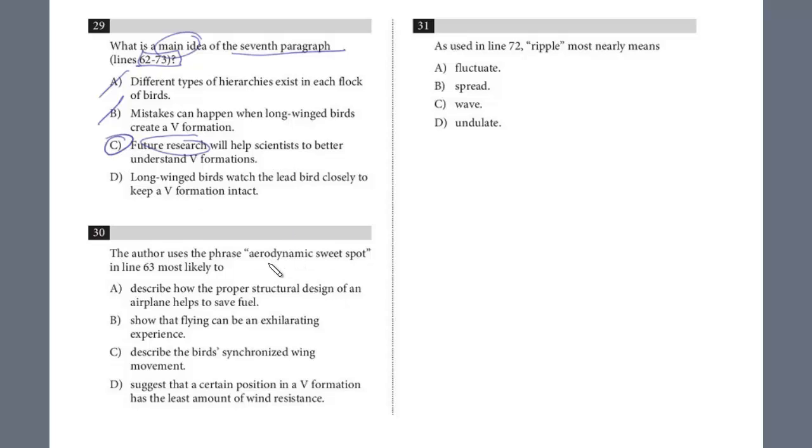And this, in line 63, we just saw this phrase in that same paragraph. Why does he use the phrase aerodynamic sweet spot? What is it likely to explain? And we can almost predict this right now. It's really they move around until they find this optimal placement. He said maybe it's by sensing by sight or by the position of the feathers.